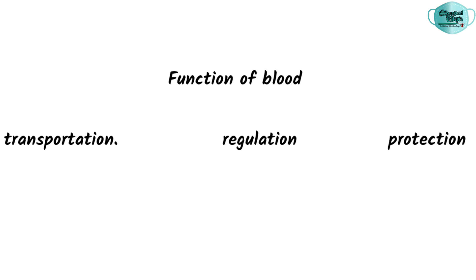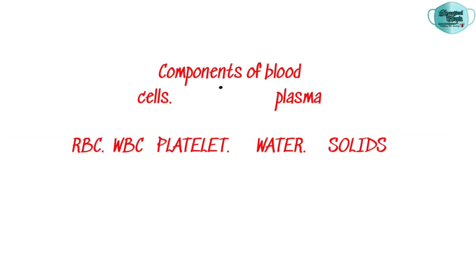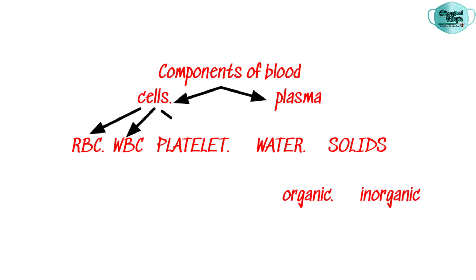The white blood cell component of the blood protects against disease by phagocytosis. Blood also acts as a reservoir for substances like water and electrolytes, and it performs hemostasis.